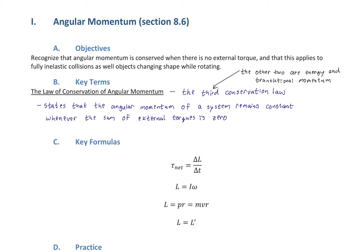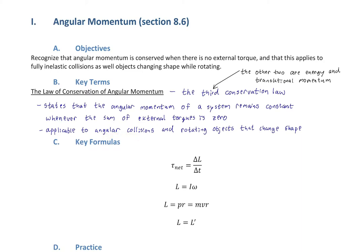We've gotten used to this pattern — replacing a with alpha, F with tau, M with I. So when do we use conservation of angular momentum? For angular collisions, when things collide and rotate, or when two rotating things collide, and for rotating objects that change their shape.